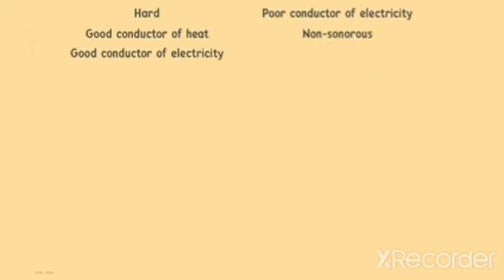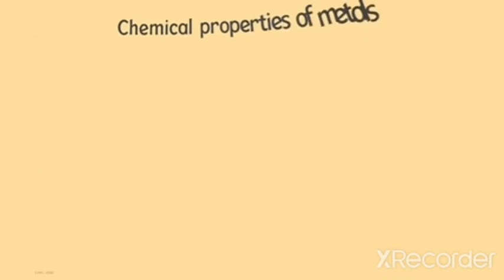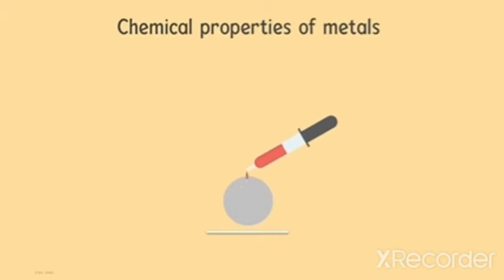We saw that elements cannot be clearly classified into metals and nonmetals based on their physical properties alone. Will chemical properties help? Let's understand the chemical properties of metals first.